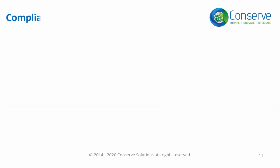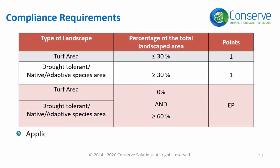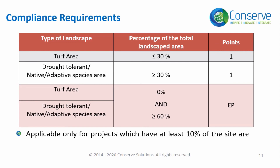Projects can achieve two points plus exemplary performance based on the percentage of native plants, adaptive plants, drought tolerant plants, and turf area in the landscape.